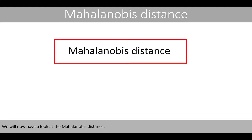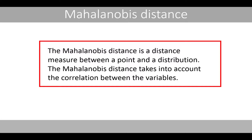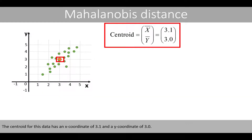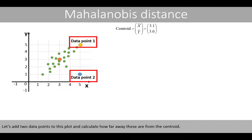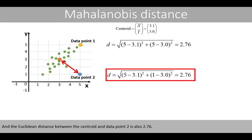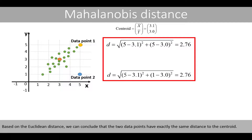We'll now have a look at the Mahalanobis distance. The Mahalanobis distance is a distance measured between a point and a distribution, and it takes into account the correlation between the variables. The centroid for our example data has an x-coordinate of 3.1 and a y-coordinate of 3.0. Adding two data points to the plot, the Euclidean distance between the centroid and data point 1 is 2.76, and the Euclidean distance between the centroid and data point 2 is also 2.76. Based on the Euclidean distance, the two data points have exactly the same distance to the centroid.